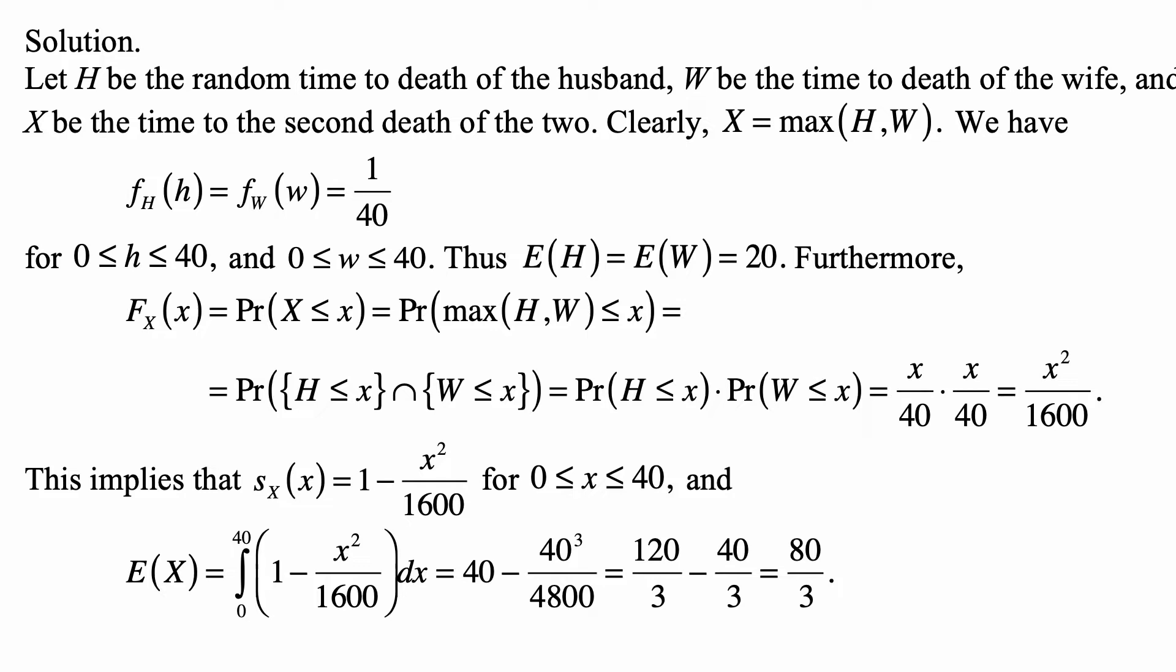Furthermore, the F sub X of x, the cumulative distribution function of x, is the probability that X is less than or equal to x. That's the probability that maximum of H and W is less than or equal to x. And that's the same probability as the probability that both of them are less than or equal to x.